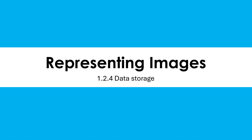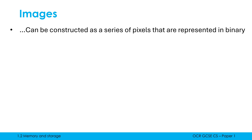We are now going to look at how we can represent images in binary. Images can be constructed as a series of pixels that are each represented in binary. There are two main ways we can represent images in binary, but this video only covers one of them. What we're covering today — where we have pixels — is called a bitmap image or a raster image, whereas the other type is a vector image, which is not covered at GCSE.